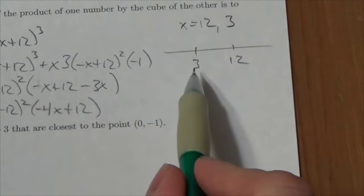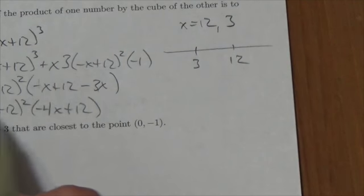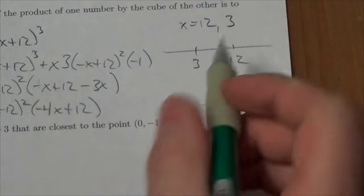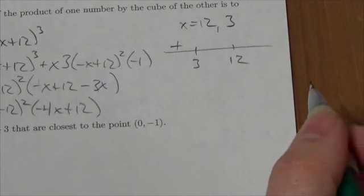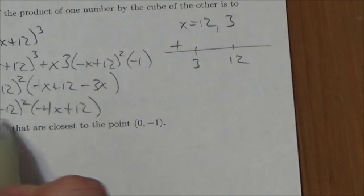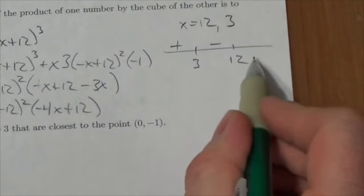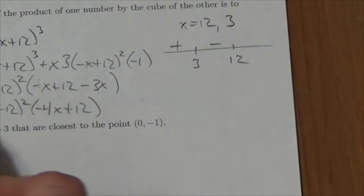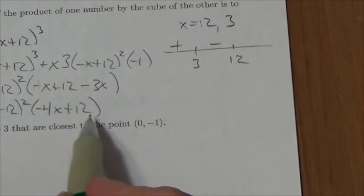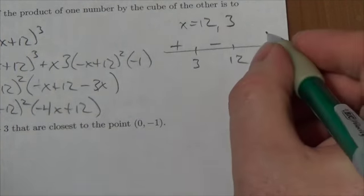And so, if we choose a number less than 3, let's say like 0, for example, 0 makes this positive, 0 makes this positive, so it's increasing here. If we choose a number between 3 and 12, I don't know, like 4, this is positive, but this becomes negative, so it's negative here. And if you choose a number greater than 12, this is still positive. But if you choose a number greater than 12, this is negative again.